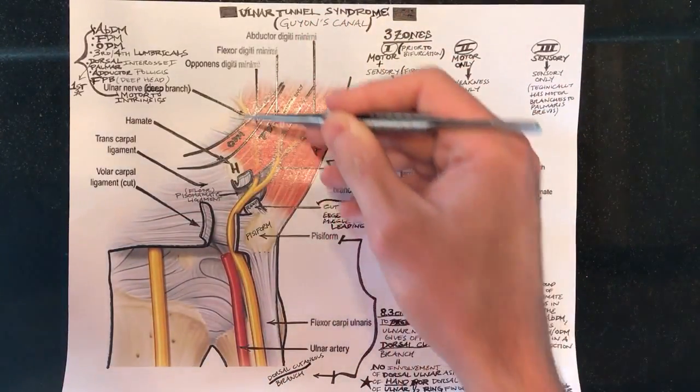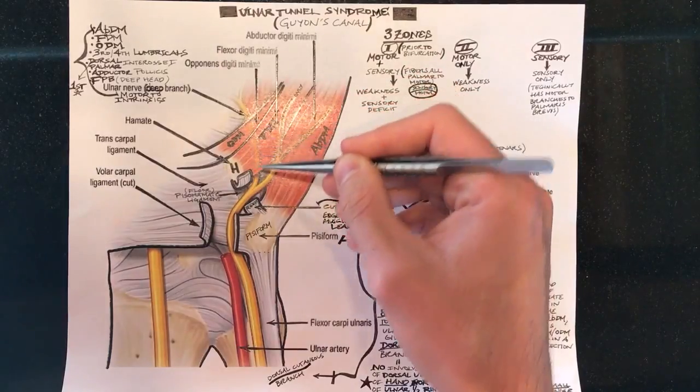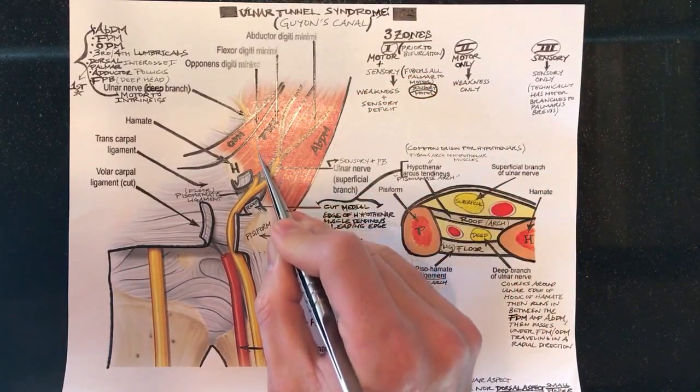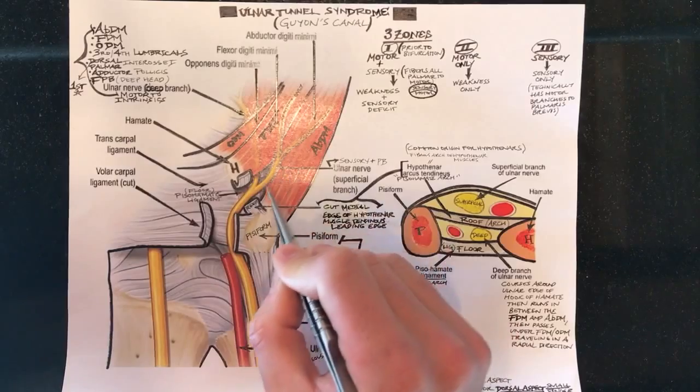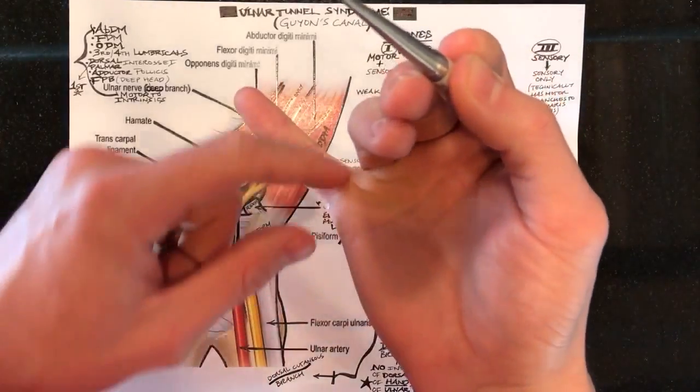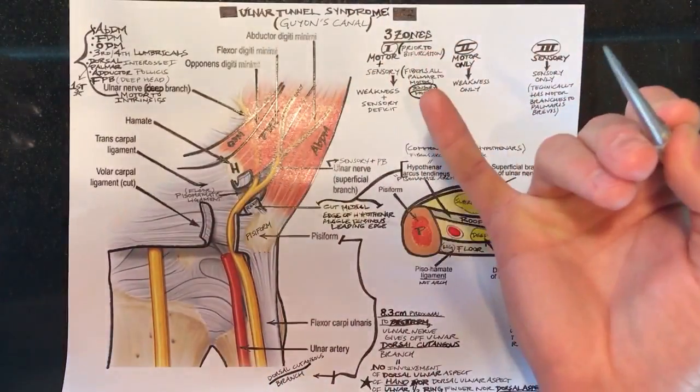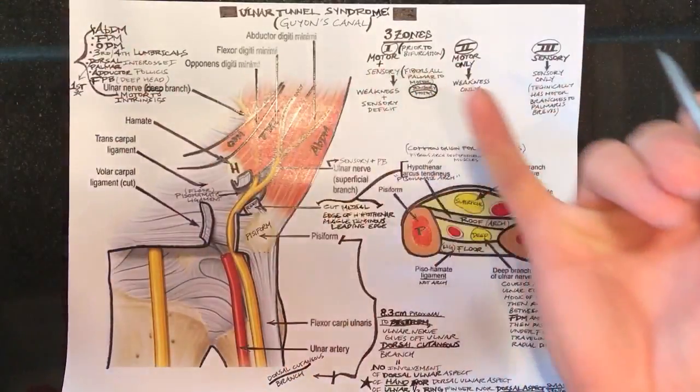So again the deep branch traveling, it goes pierces through the hypothenars, dives down deep, and then the superficial branch stays superficial obviously because it's a sensory, not purely sensory but mostly sensory nerve.